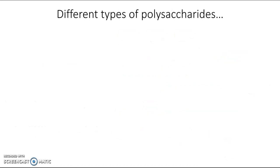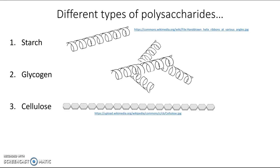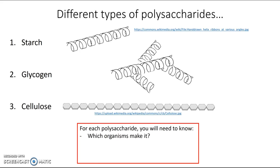There are three polysaccharides you need to know for this class: starch, glycogen, and cellulose. We'll go over the details in class, but for each one you'll need to know who makes it, what its function is, what the general structure of the molecule is, and whether or not humans can hydrolyze or digest it — and you might be able to guess the answer to that last one based on the linkage diagrams.